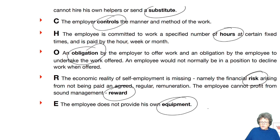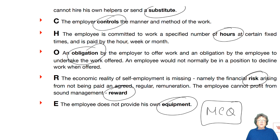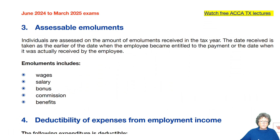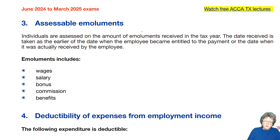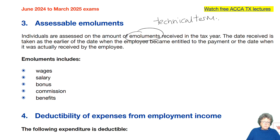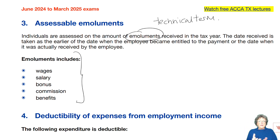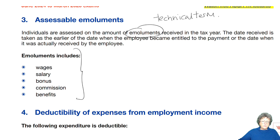These principles are most likely to come up in multiple choice questions. The rules apply to the scenario that you're given, the same as before. Emoluments is a technical term relating to basically what you've received as income. These emoluments include your wages, your salary, your bonus, your commissions, and any benefits and tips — it's a tax technical term for everything that you receive from your employment.